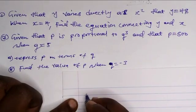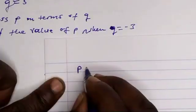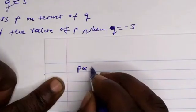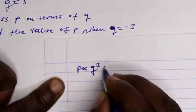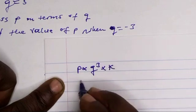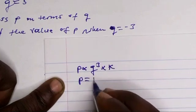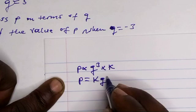P is directly proportional to q cubed, multiplied by k, so we have p equals k times q cubed.